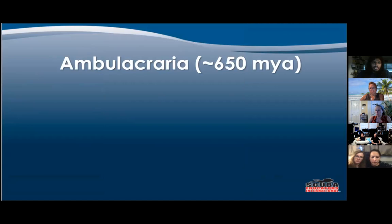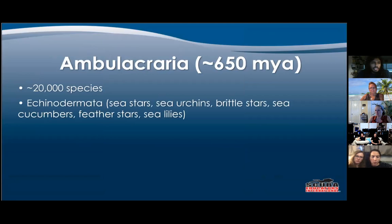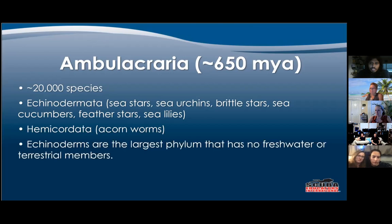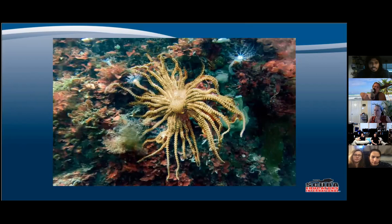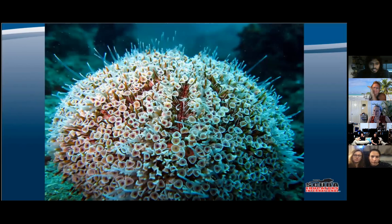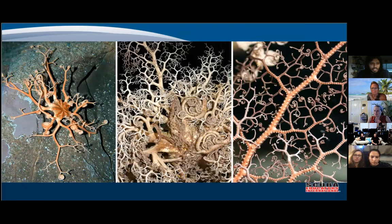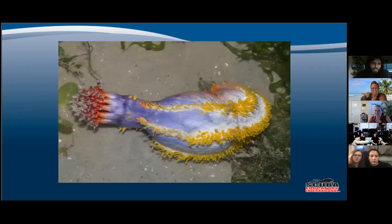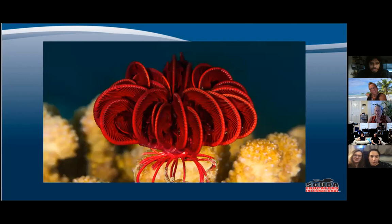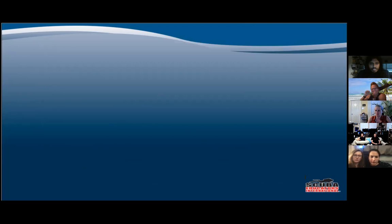Ambulacraria — there are 20,000 species. You have Echinodermata, which are your sea stars, sea urchins, brittle stars, sea cucumbers, feather stars, and sea lilies, and also Hemichordata, which are acorn worms. This is the largest phylum that has no freshwater or terrestrial members. They can completely regenerate from a single limb. Here you have a Labidiaster sea star with many more arms than typical, a flower urchin, a basket star, a sea cucumber, a feather star — which can actually swim around — and then sea lilies.